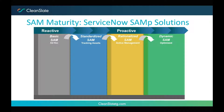Looking at this SAM maturity model can seem daunting, but it can definitely be done incrementally. We typically advise starting with one publisher, working that model, and then tackling other publishers, picking your riskiest ones first. There are multiple phases you can take: start with a readiness assessment, determine what maturity phase you want to be at, compare that to where you currently are for a gap analysis, and then build a roadmap. That's where experts like CleanSlate can help you align your vision with where you are and put together a concrete roadmap.